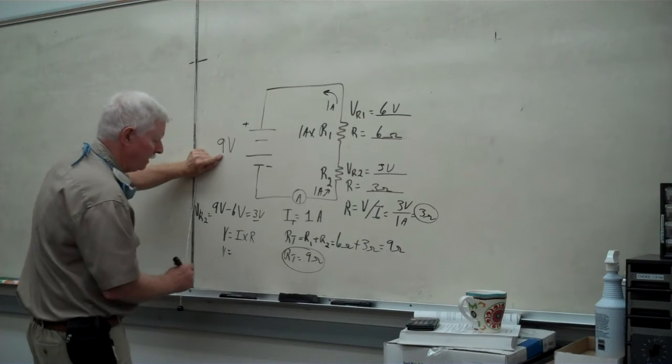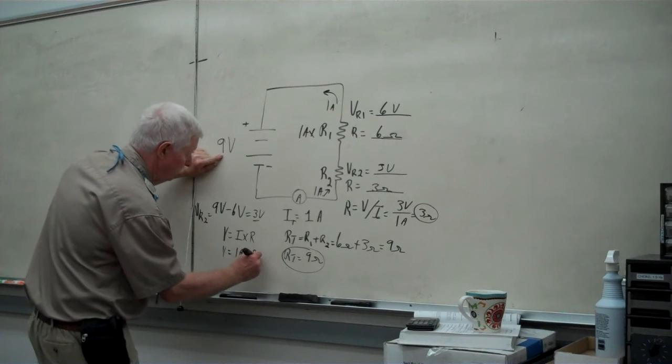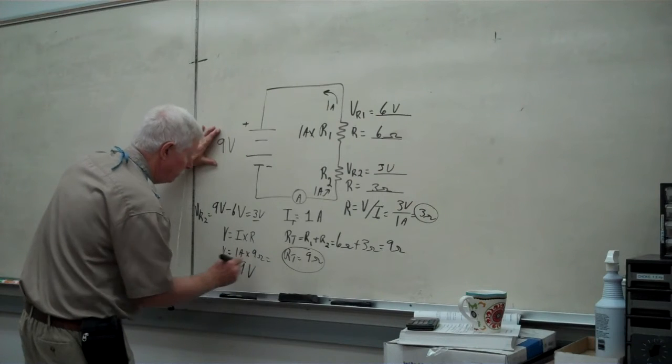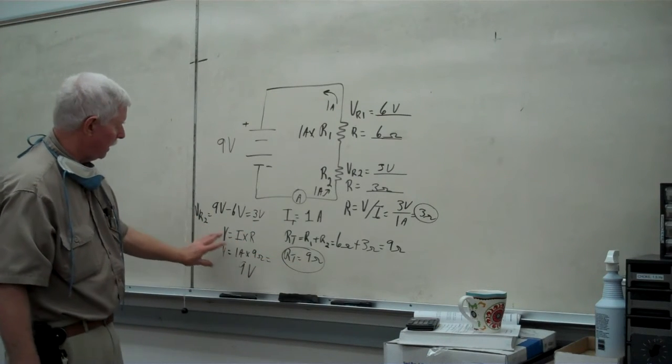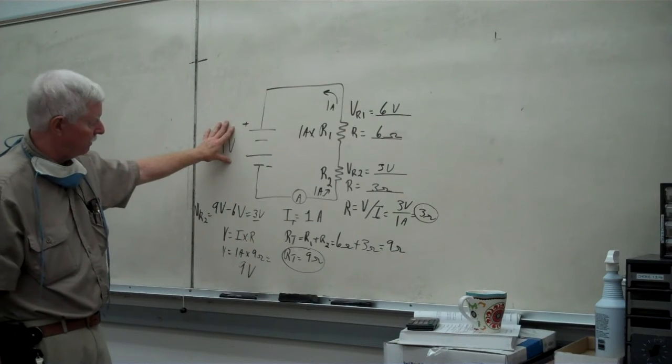So, in this particular case, we've got 1 ampere times total 9 ohms, and we have a circuit applied voltage of 9 volts. 1 ampere times 9 ohms total resistance. Now, we've got this confirmed that this actually is 9 volts.